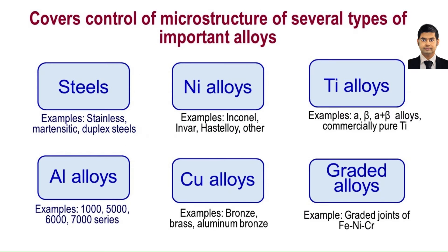In this review paper, we provide alloy-specific control strategies for grain structure, phases, and defects in printed parts. We focus on most of the major alloy groups such as steels, nickel alloys, titanium alloys, aluminum alloys, copper alloys, and compositionally graded alloys.